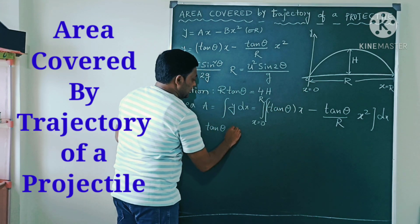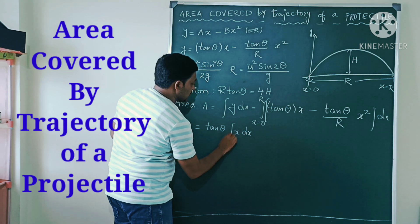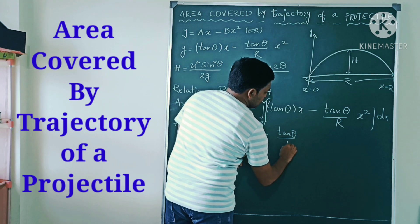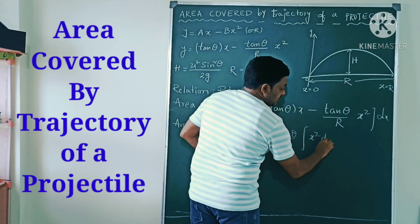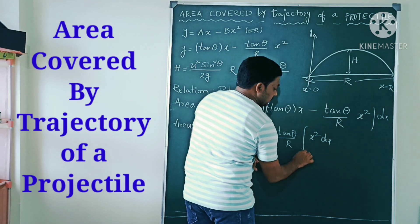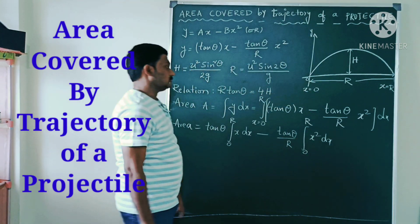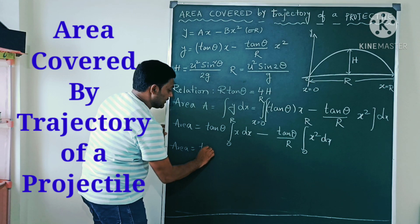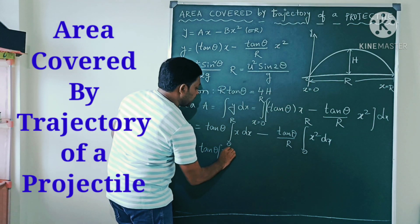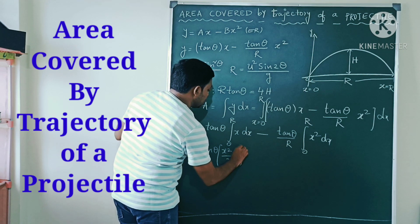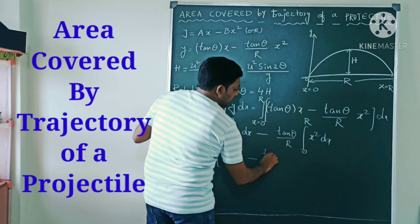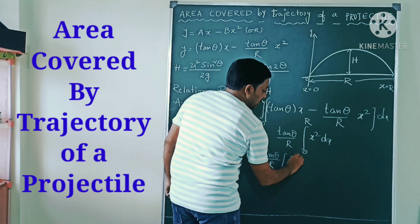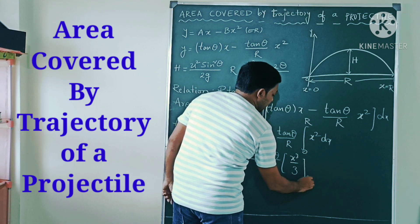Area equals tan θ times the integral of x dx with limits 0 to R, minus (tan θ / R) as a constant times the integral of x² dx with limits 0 to R. Applying the formulas: integral of x dx gives x²/2, and integral of x² dx gives x³/3, both evaluated from 0 to R.